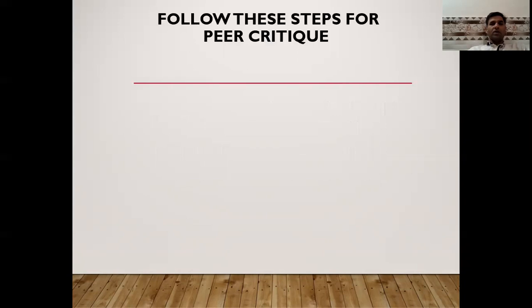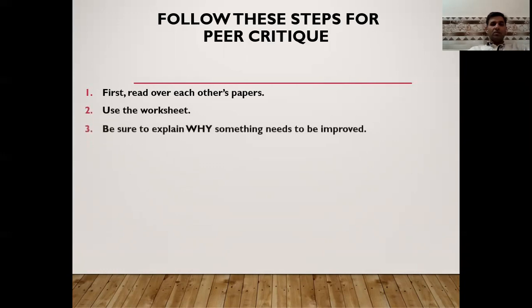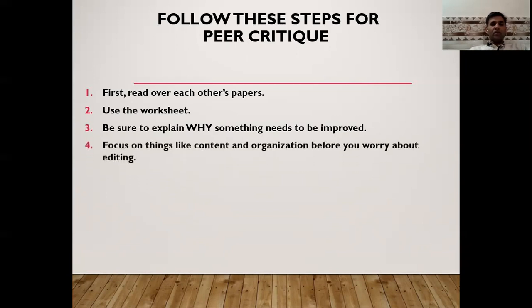Here are the steps for doing this peer critique assignment. Number one: read over each other's papers. Number two: use the worksheet. Number three: be sure to explain why something needs to be improved — why is very important. Number four: focus on things like content and organization before you worry about editing — focus on the structure of the research paper.